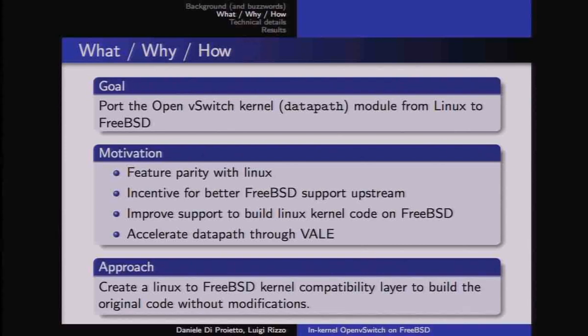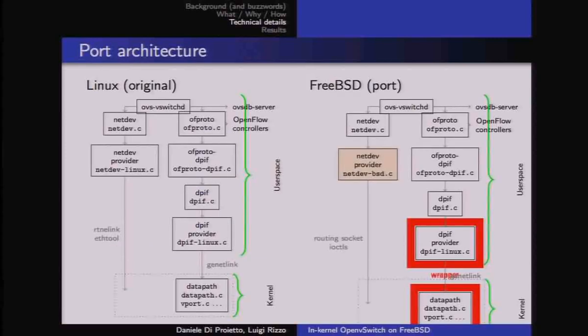The approach we use is to create a kernel compatibility layer that maps Linux data structures, functions, and methods to FreeBSD equivalents — without modifications to the original source code if possible. The technical details describe our experience implementing this.